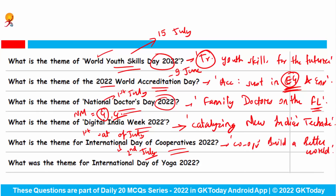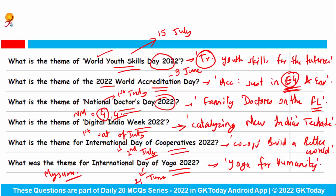What was the theme for the International Day of Yoga 2022? Every year we celebrate it on the 21st of June, and this year the theme was 'Yoga for Humanity'. Remember, the main celebration of the International Day of Yoga was held in Mysore.